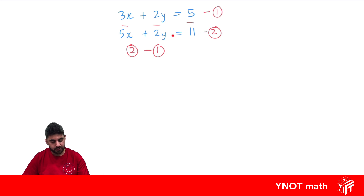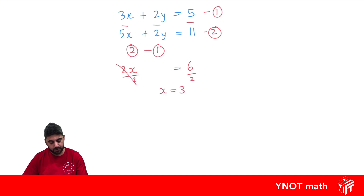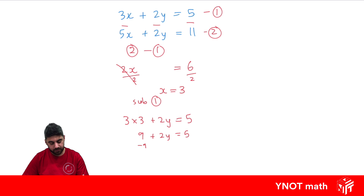I like writing in minuses in between. You can do equation 1 minus equation 2 or equation 2 minus equation 1 — I usually look for the bigger values and put that one first. The bigger values are in equation 2, so I'm going to do equation 2 minus equation 1. So we do 5x minus 3x, which gives us 2x. Then 2y minus 2y equals 0 — that's the whole point. And 11 minus 5 equals 6. So 2x equals 6. Dividing both sides by 2, x equals 3. Substituting into equation 1: 3 times 3 is 9, plus 2y equals 5. Subtracting 9 from both sides, 2y equals minus 4. Dividing both sides by 2, y equals minus 2. Therefore, x equals 3 and y equals minus 2.